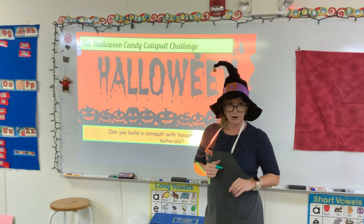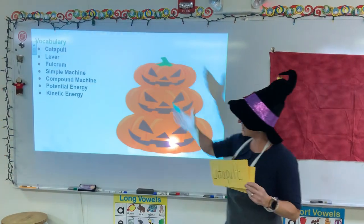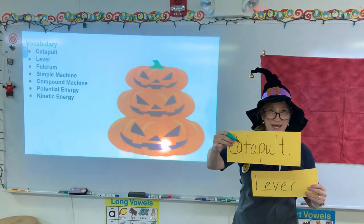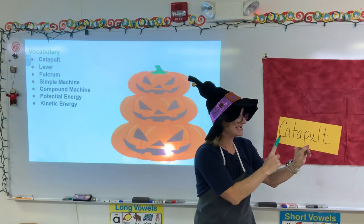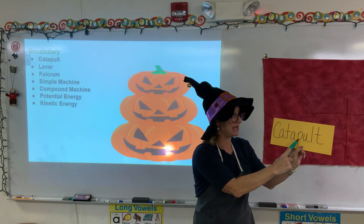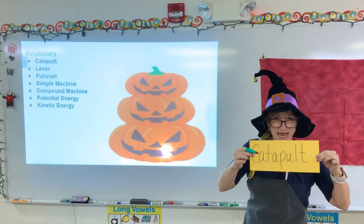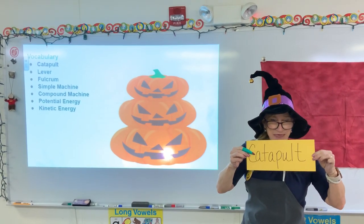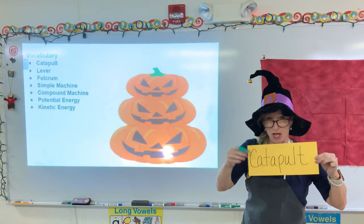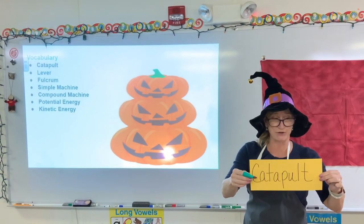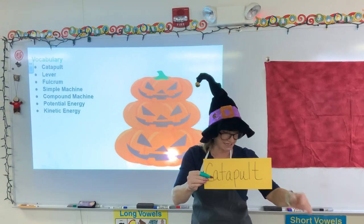Before we start there are a few words we're going to go over. The first word is catapult — C-A-T-A-P-U-L-T. They can launch missiles, they can launch candy, and they can be used very usefully as a machine in science and math. We're going to combine math and science today. A catapult is a type of machine — it launches and propels things in the air.